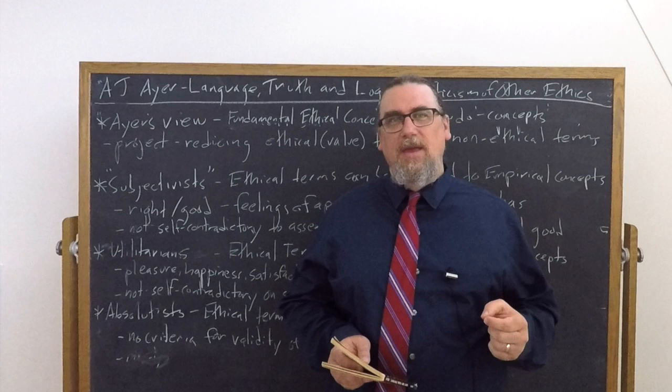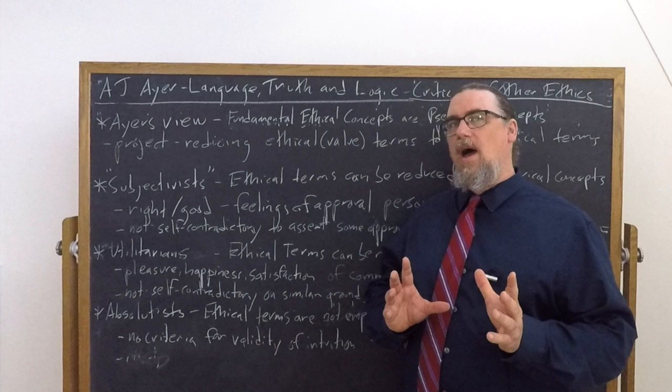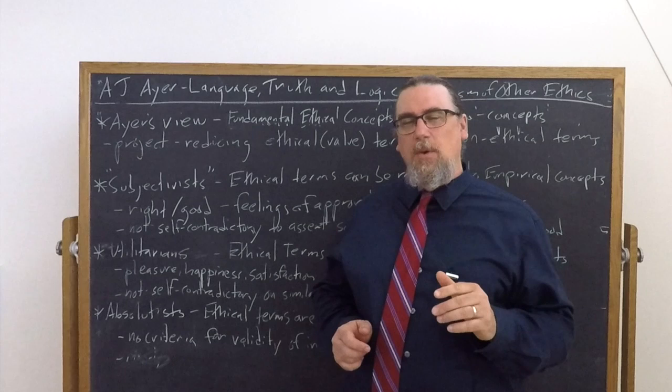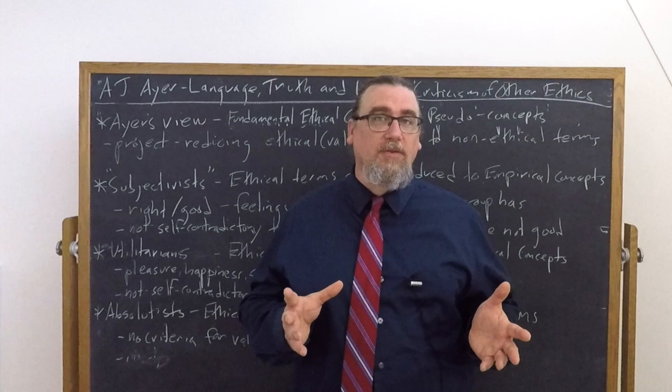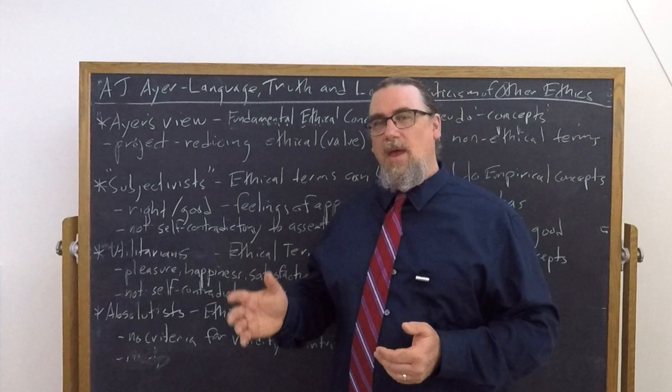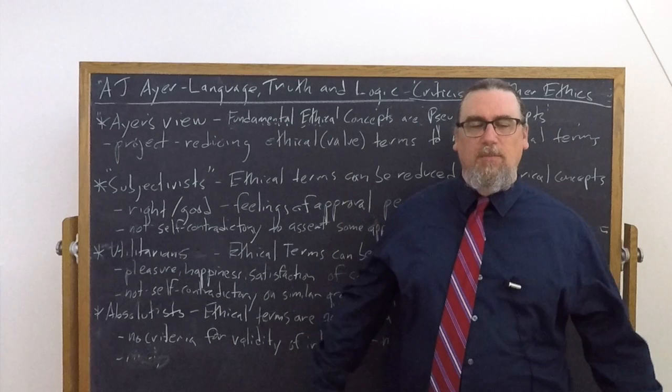So who would we associate with those? Later on, W.D. Ross and his intuitionist theory would fall into the absolutist view. I think Immanuel Kant definitely does, and Ayer talks about him. The utilitarians, of course, would be Bentham, John Stuart Mill, Henry Sidgwick, and even Moore to a certain extent. And then there was a whole bunch of different subjectivists out there in ethics at the time as well, most of whom are not very well known.